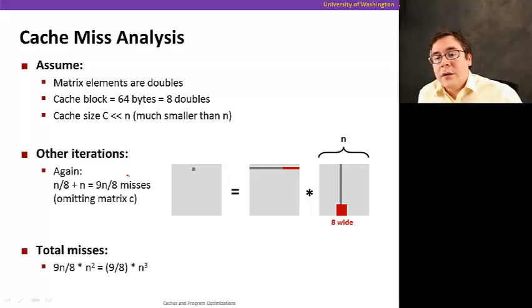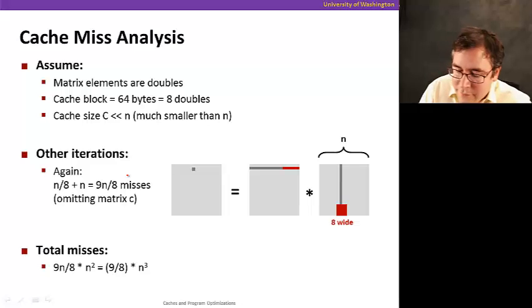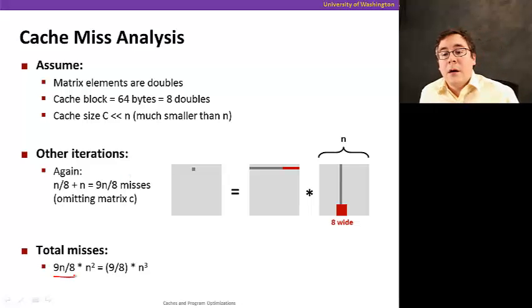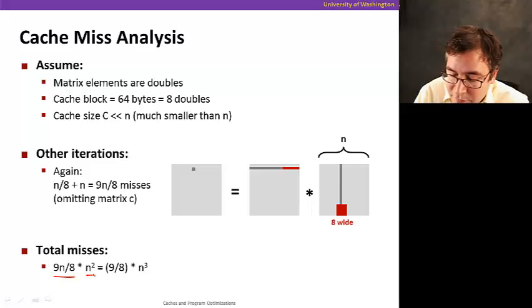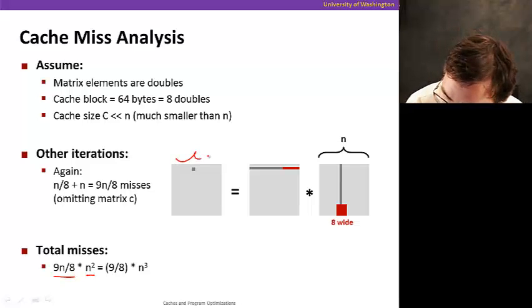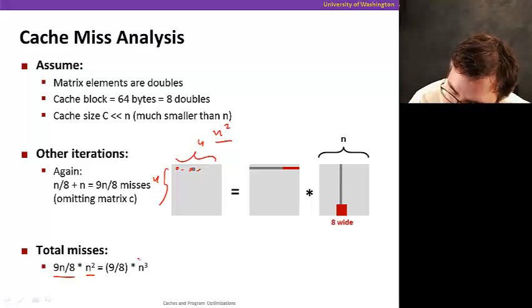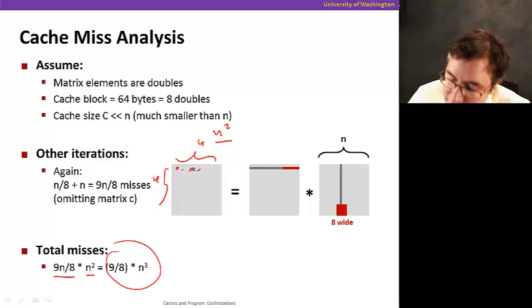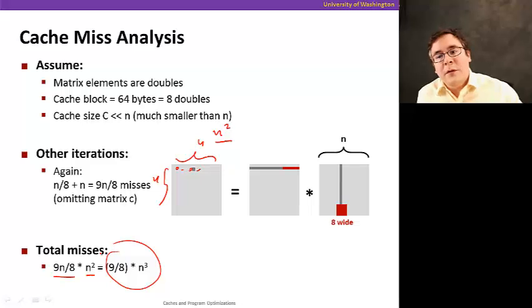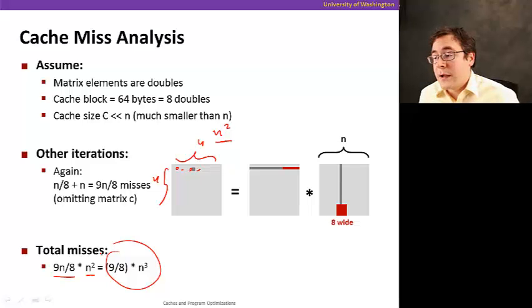If we extend this to all iterations, we have 9n over 8 misses multiplied by n-squared, which is the number of iterations — because we compute one output element for each of the n-squared entries in the n-by-n result matrix C. So the total number of cache misses is 9/8 times n-squared. That's a lot of cache misses.